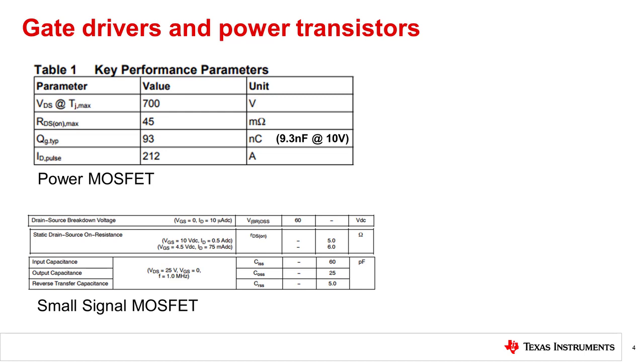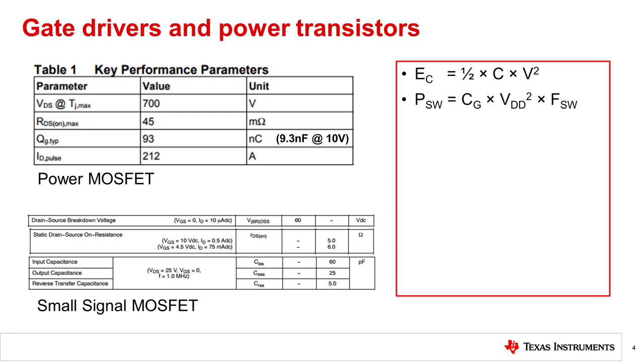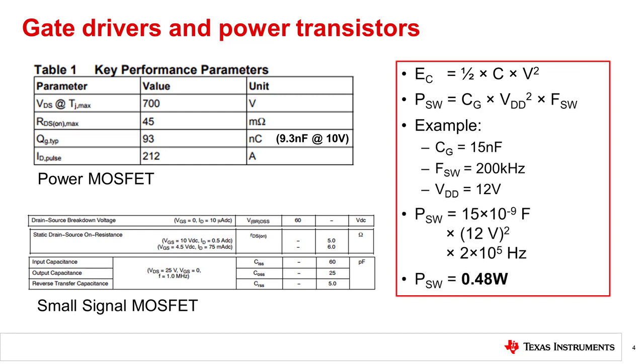This frequency limitation is due to the increased gate capacitance and drive voltage requirements. The energy of a capacitor is given by one-half times the capacitance times the voltage squared. The power consumed by charging and discharging the gate capacitance is the energy of the capacitor multiplied by twice the frequency, once for charging, once for discharging. A power transistor with 15 nanofarad gate capacitance, driven at 200 kilohertz with a 12-volt square wave, requires nearly half a watt.